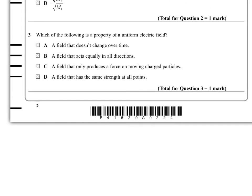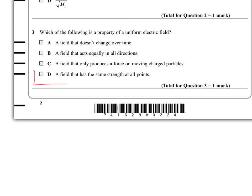Question 3. Which of the following is a property of a uniform electric field? A field that doesn't change over time, a field that acts equally in all directions, a field that only produces a force on moving charged particles, and a field that has the same strength at all points. Well, again, this is just book work. A field that has the same strength at all points is what a uniform electric field is.